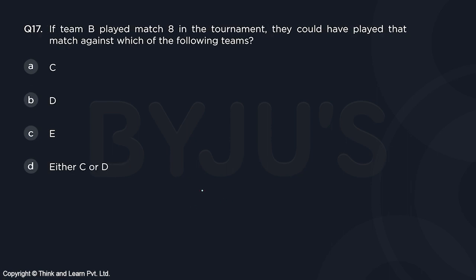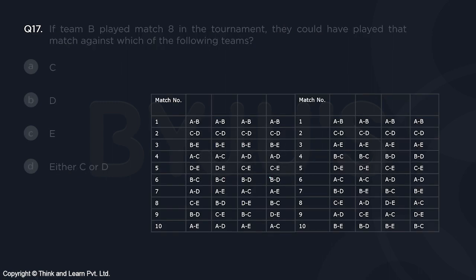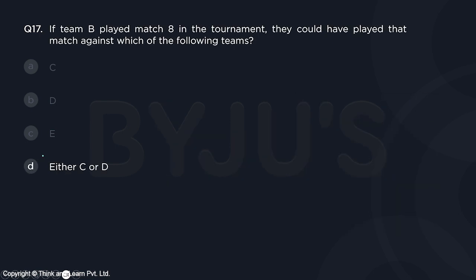Next question: if team B played match eight in the tournament, which team could they have played against? Looking at the eight cases, B played match eight with D in one case and with C in another. So they might have played against D or C. The answer is option D — either C or D.